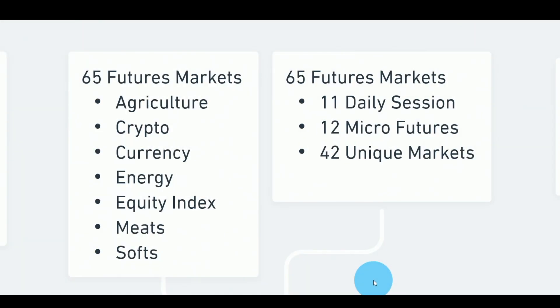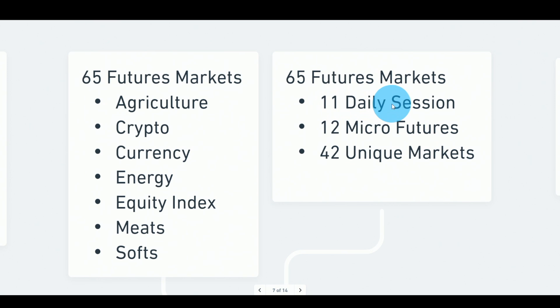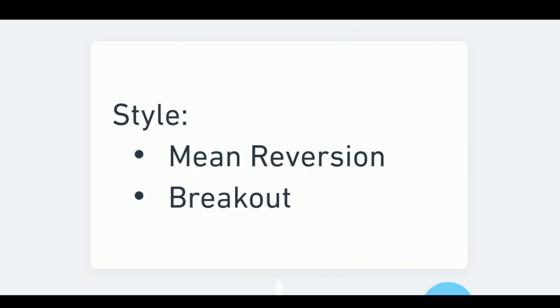The goal is to reduce the discrepancy as much as possible so we can clearly say one indicator is better or worse than another. Once speeds are defined, we set up our markets. I have 65 futures markets across seven categories: agriculture, crypto, currency, energy, equity, meats, and softs. Out of those 65, 11 markets have two data sets — a daily session and a 24-hour session — and 12 are micro futures for the same markets, giving 42 unique markets in total.